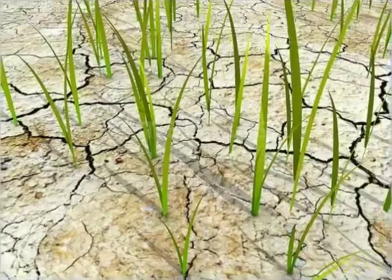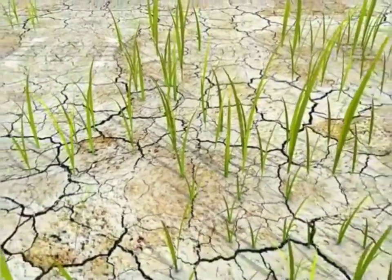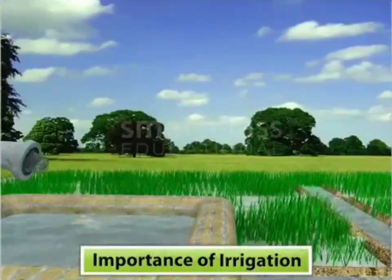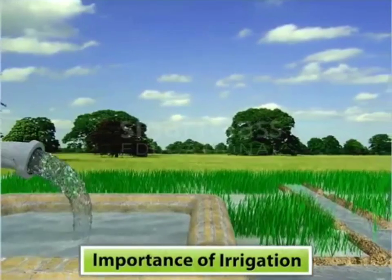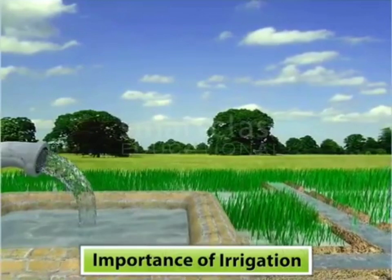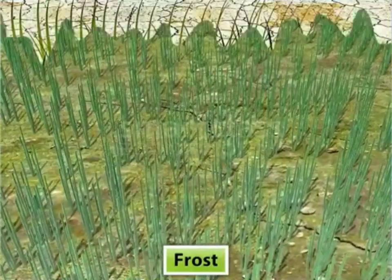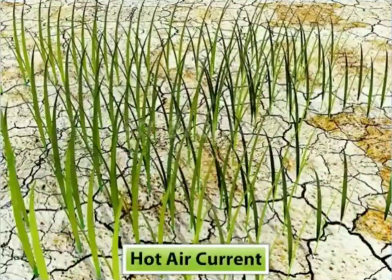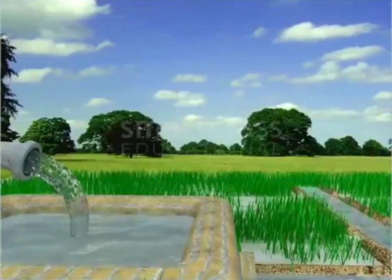Why do we have to irrigate the land? What are the importance of irrigation? Irrigation is necessary for the germination of seeds. Plants absorb nutrients through water, so irrigation is needed. Irrigation also protects plants from frost and hot air currents, and it is necessary to maintain the moisture content of the soil.